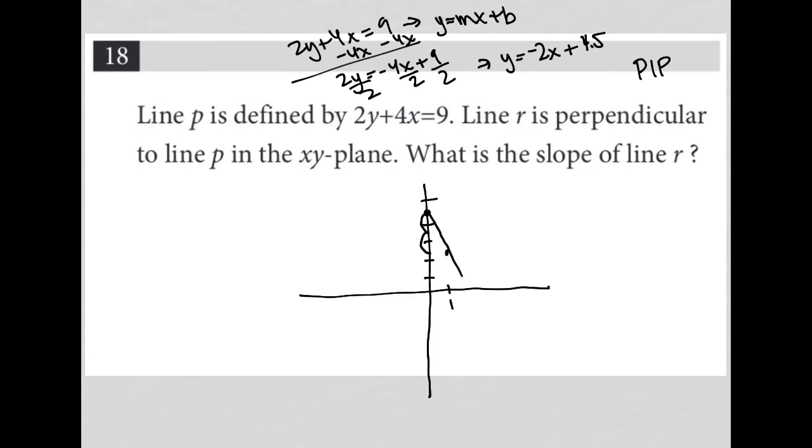...which takes me here, which means my line looks something like that. Not perfect, but good enough. So that is line P.